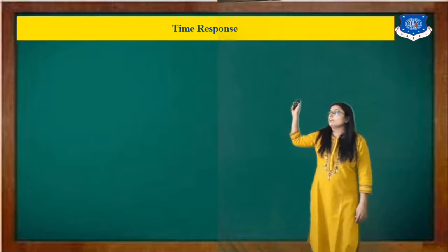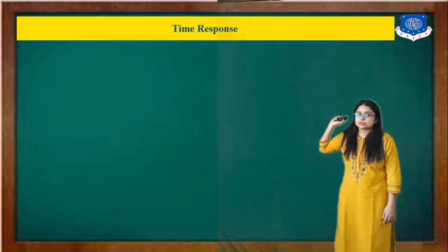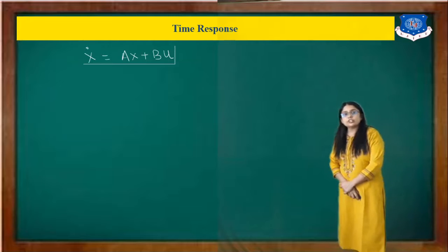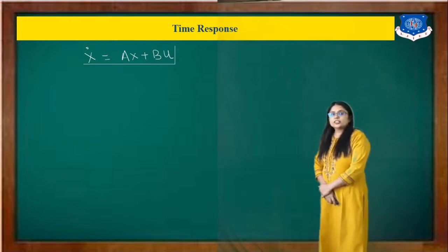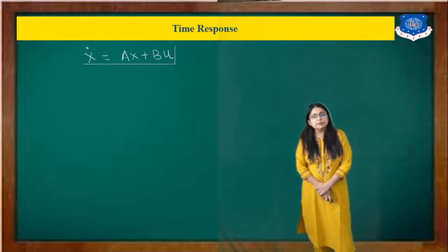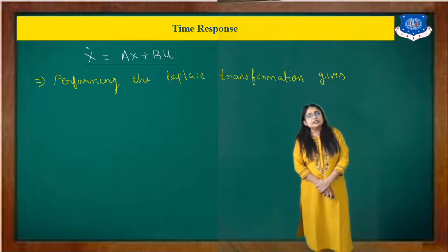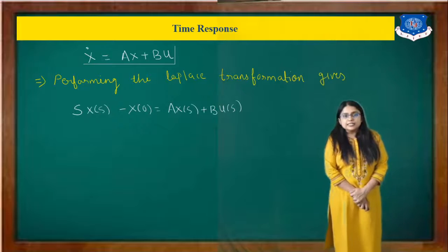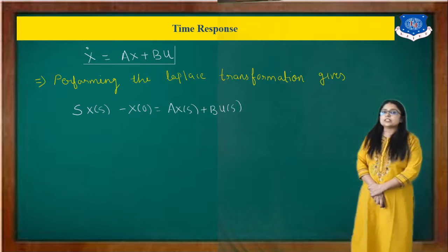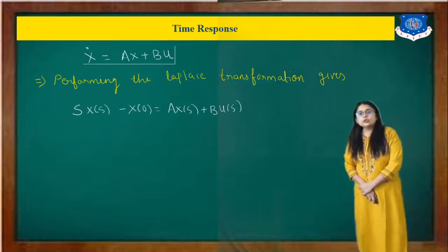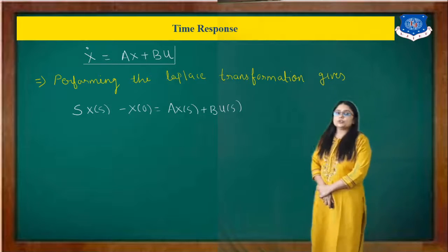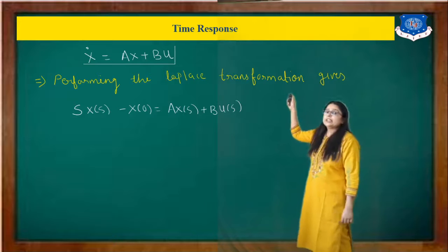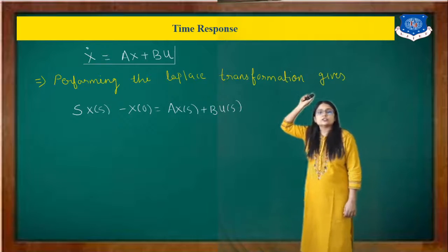First of all we will study the time response. For that, consider the equation x-dot equals Ax plus Bu. Now take the Laplace transform. So we have s·X(s) minus x(0) equals A·X(s) plus B·U(s). It is difficult to find out x(t) directly from this equation because we have a differentiation.